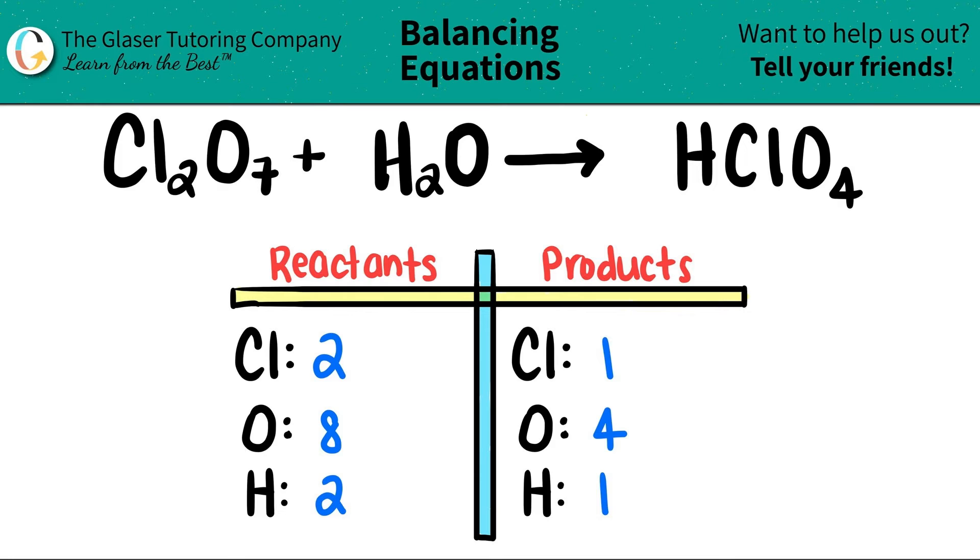Pick the one that is easiest to balance by multiplication. I'll start with the chlorine. I always go from the lower number to the higher number by multiplication. 1 times what will get me to 2? 1 times 2 is 2. And that number that you stated is the coefficient of the compound in which you have that element. So I'm going to put a 2 here.